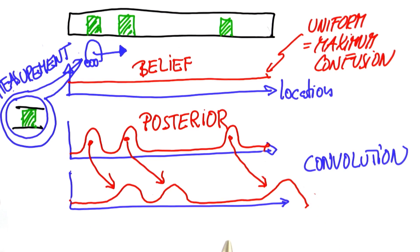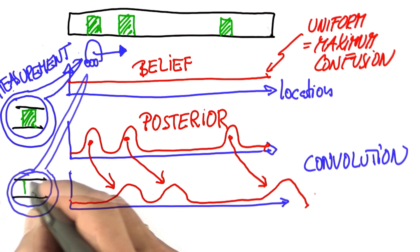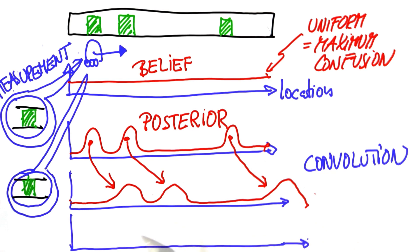And let's now assume the robot senses again. And for the sake of the argument, let's assume it sees itself right next to a door again. So the measurement is the same as before. Now, the most amazing thing happens. We end up multiplying our belief, which is now prior to the second measurement, with a function that looks very much like this one over here, which has a peak at each door. And out comes a belief that looks like the following.